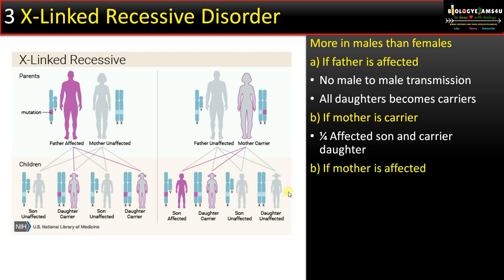The third possibility: if the mother is affected (homozygous recessive, x^d x^d), then all sons become affected, as sons receive the X chromosome from the mother.